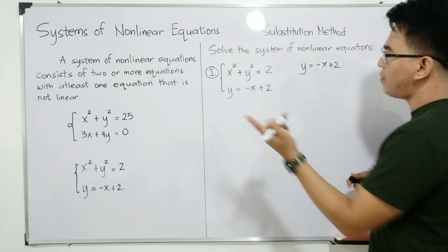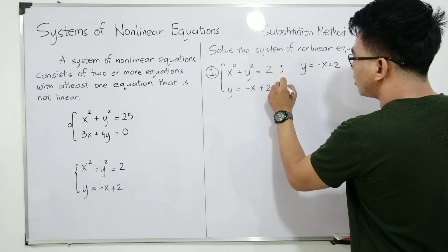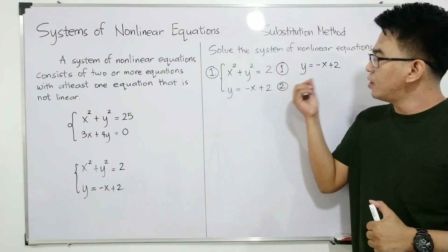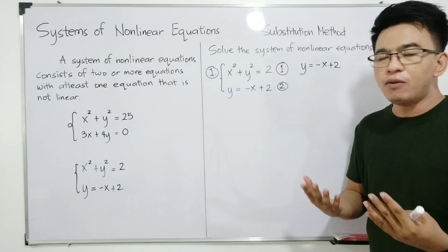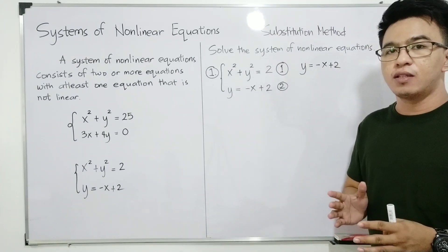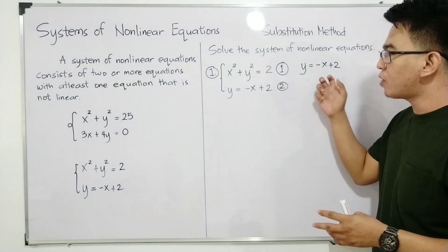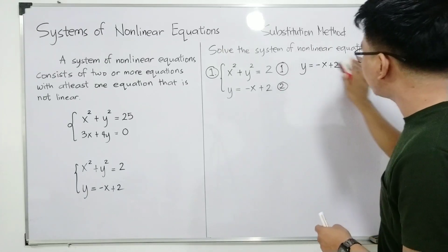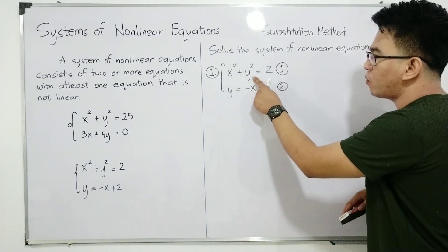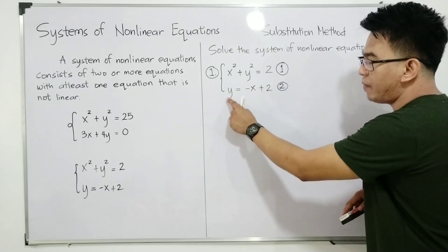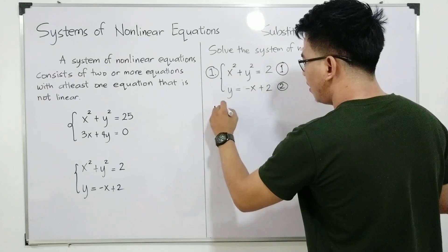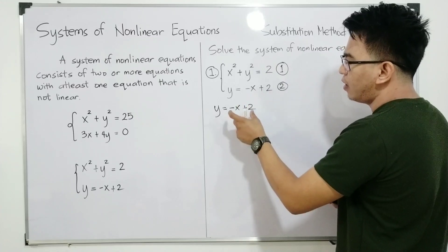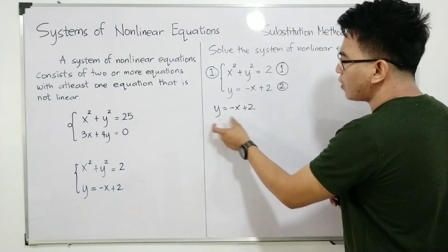So we can have here y is equal to negative x plus 2. What is the next step after solving for a specific variable? By the way, this is your equation number 1, and this is your equation number 2. So I will use equation number 2, and I will substitute equation number 2 into equation number 1. We will replace the variable y in equation number 1 using this value. Because y is equal to negative x plus 2, we can replace y using this expression, negative x plus 2.